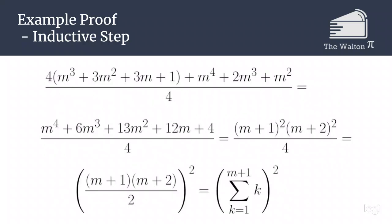We can then combine terms and that will simplify down to m to the fourth plus 6m cubed plus 13m squared plus 12m plus 4, all over 4.